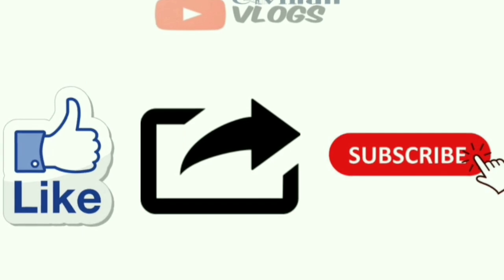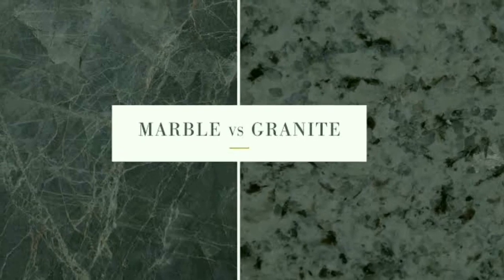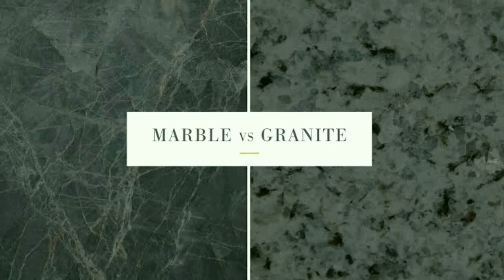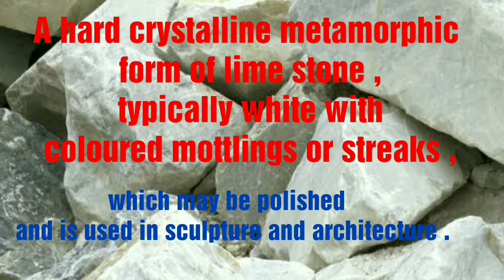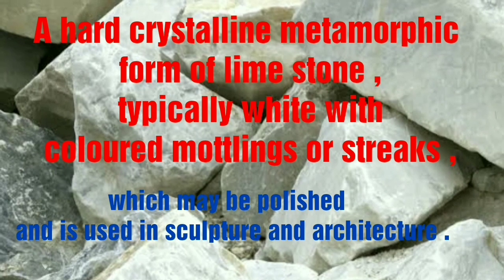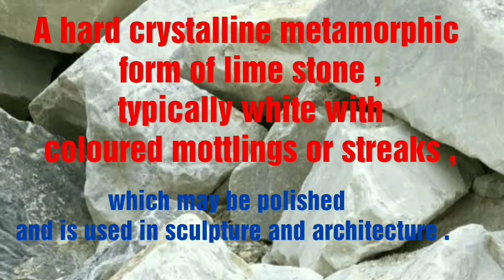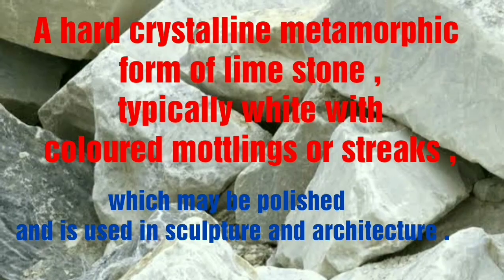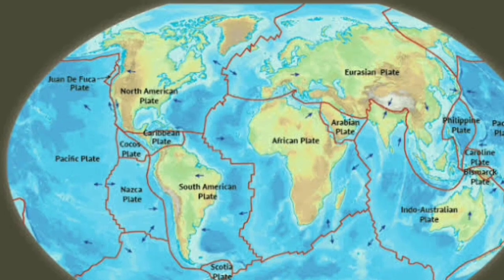First of all, marble and granite definition. Marble is a hard crystalline metamorphic form of limestone, typically white with colored mottings or streaks, which may be polished and is used in sculpture and architecture. In the middle of the earth, tectonic pressure is applied with high pressure and temperature to form marble.